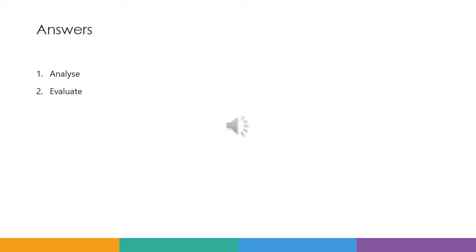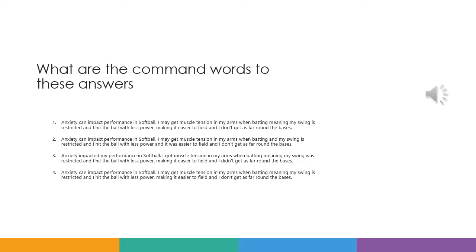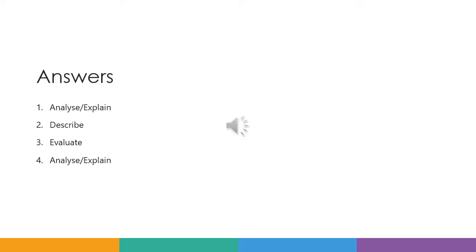And here are your answers. Number one was analyse because that was pretense, and number two was evaluate because it was post tense. Now what are the command words to these answers? You've got four there — take your time to figure out what number one, two, three, and four is, and decide what command word would have been asked. Number one could have been analyse or explain — but in the exam, make sure you put the right letters down; if you're doing an explain answer, make sure you're doing FACI, not the III for analyse. Number two is describe. Number three was evaluate. And number four was analyse or explain.